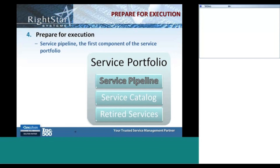The fourth step in service strategy is preparing for execution. As we are ready to execute our strategy, it's important that we update our service pipeline. The service pipeline is the first component of our service portfolio. The service portfolio is made up of three components: the pipeline, the service catalog, and retired services. The pipeline is simply the listing or outline of proposed services that are not yet in production.